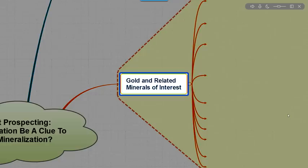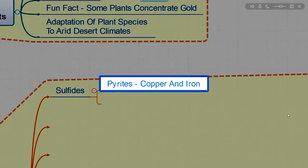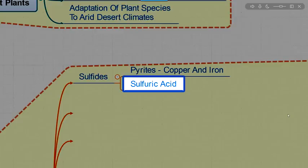So gold and related minerals of interest that we're going to be looking into are sulfides. Specifically, pyrites, copper, and iron. And then that basically decays into a form of sulfuric acid, which has a property when it comes to plants as well.